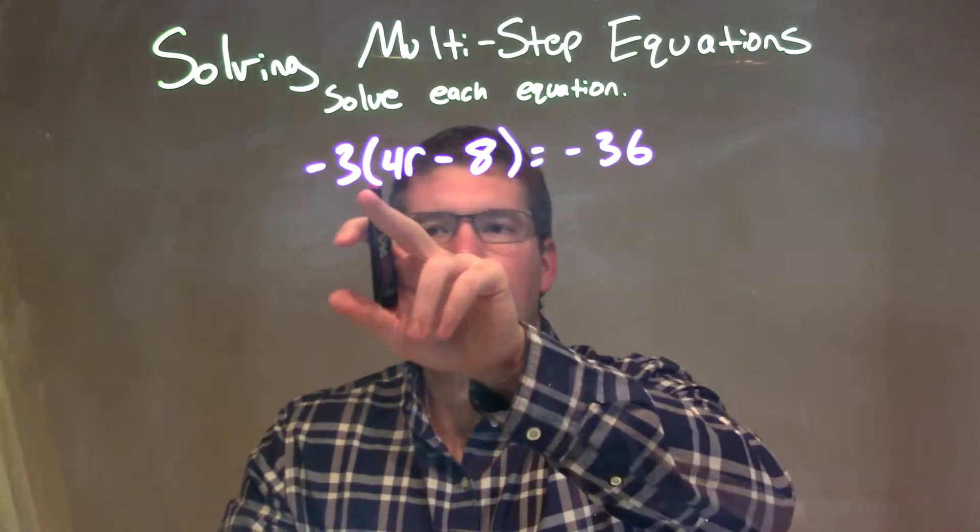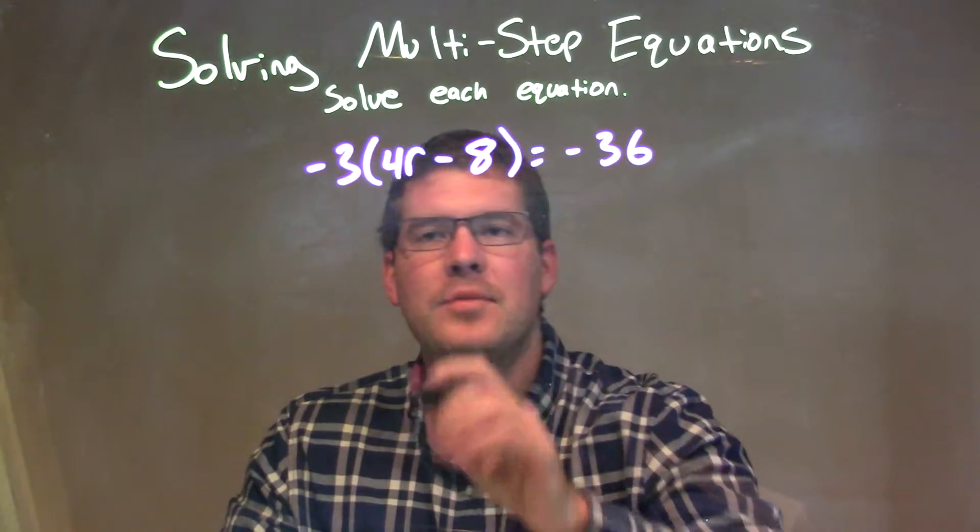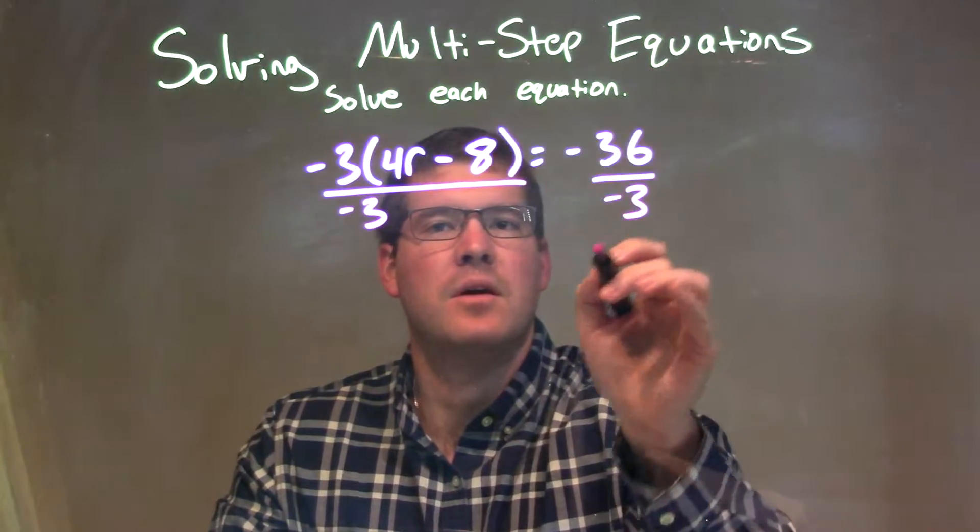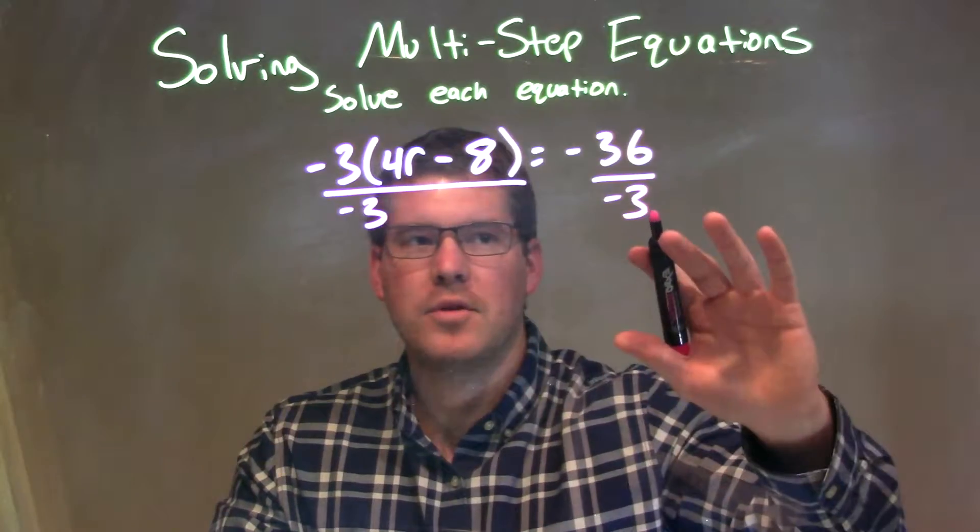Well, I see a multiplication going on here—negative 3 times in my parentheses. The opposite of multiplication is division, so actually I'm going to divide by negative 3 on both sides. And what that does is it doesn't make me distribute that negative 3; I just bring it over to the right.